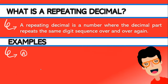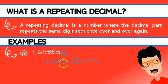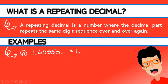Let's look at some examples. Example A is 1.65555... — we see the three dots indicating the number continues, so the five repeats over and over. This is a non-terminating repeating decimal. Instead of writing three dots, we can write 1.65 with a line on top of the five to indicate that the five is the repeating digit.